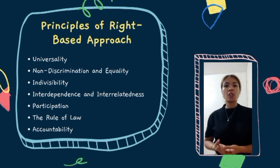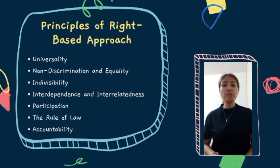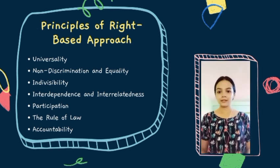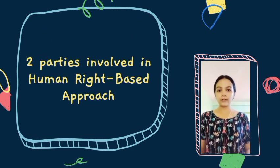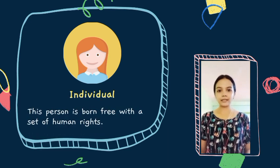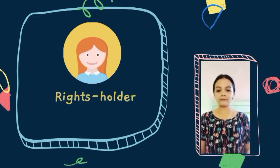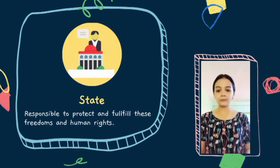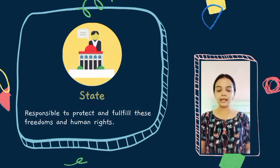Seventh, accountability — the whole idea about rights is that they must be delivered. There is an obligation to give these rights to their rights holders. To fully understand the human rights-based approach, we need to look at the two parties involved. On one side, we have the individual — a person born free with a set of human rights, called the rights holder. On the other side, we have the state, which is called the duty bearer, responsible to protect and fulfill its citizens' freedoms and human rights through legal obligations when signing international human rights agreements.